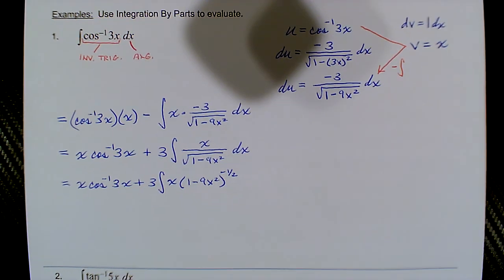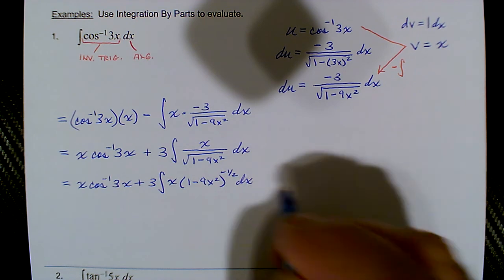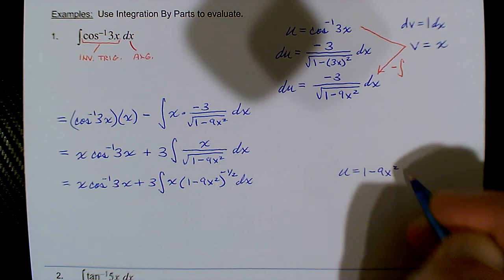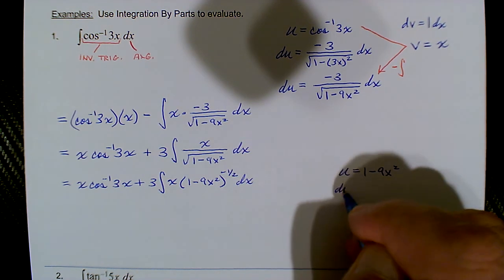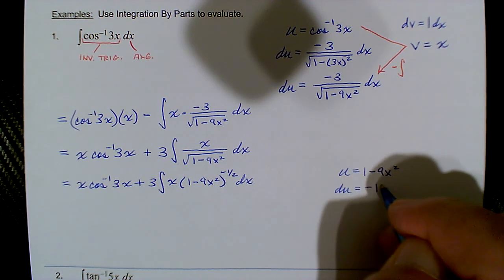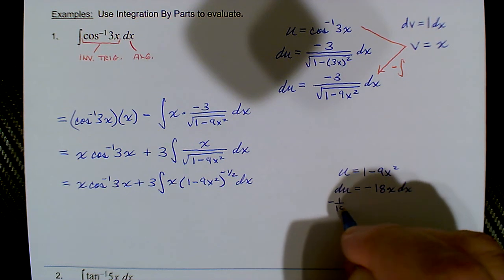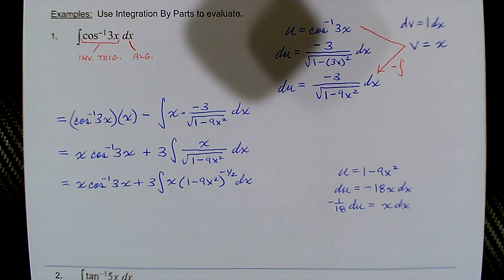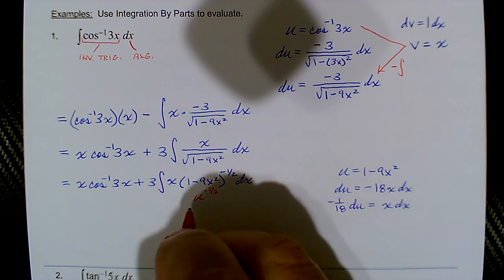Now it's just a basic u-substitution. Choose u = 1 minus 9x². The differential du = −18x dx, and routinely modified, −1/18 du = x dx. We were fitting the form u^(−1/2). Looking at the leftovers — x and dx — compare them to du: they match, just modified by −1/18.